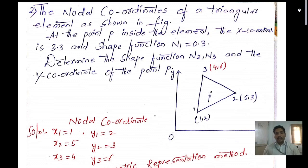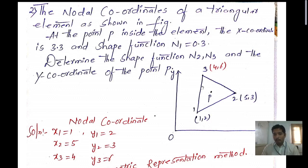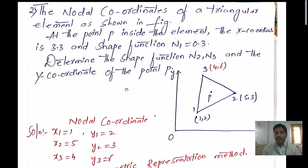The nodal coordinate of a triangular element is as shown in the figure. At point P inside the element, the X coordinate is 3.3 and the shape function n1 is 0.3. At this interior point, only the X coordinate value 3.3 is given but the y1 value is not given. So we need to find the value of y1, as well as the shape functions n2 and n3, and the y coordinate of the point.